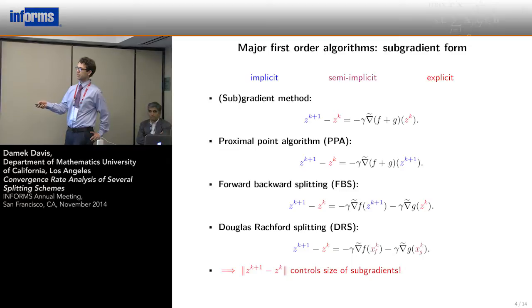The forward-backward splitting algorithm is a mixture of the two. It first takes an explicit step followed by an implicit step. The Douglas-Rachford splitting algorithm is also of a similar form, but it's a mixture of points. These x_f and x_g are mysterious points that arrive in the analysis. Why do I show these forms today? Because the successive iterate difference controls the size of the sub-gradients.